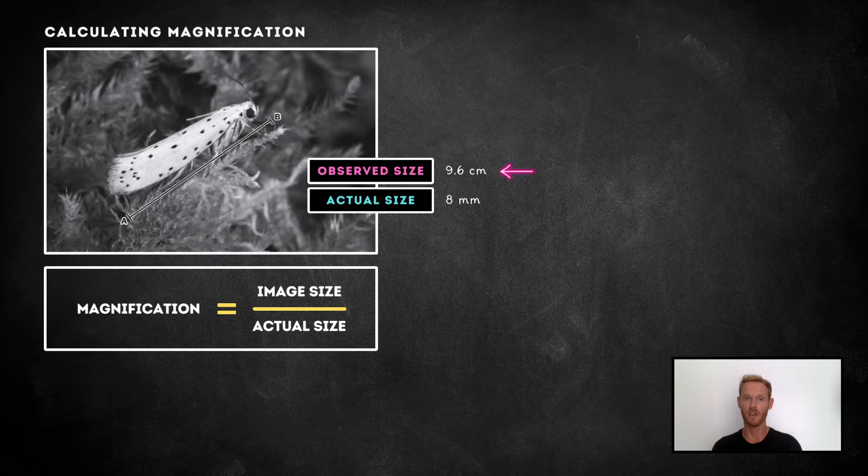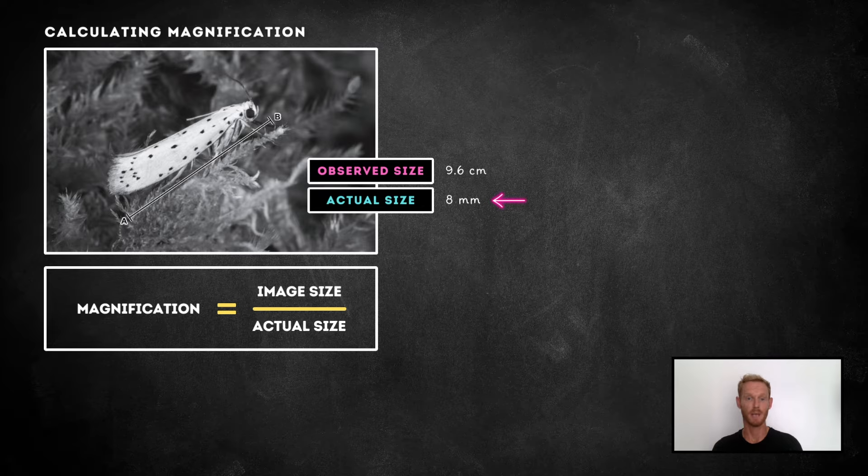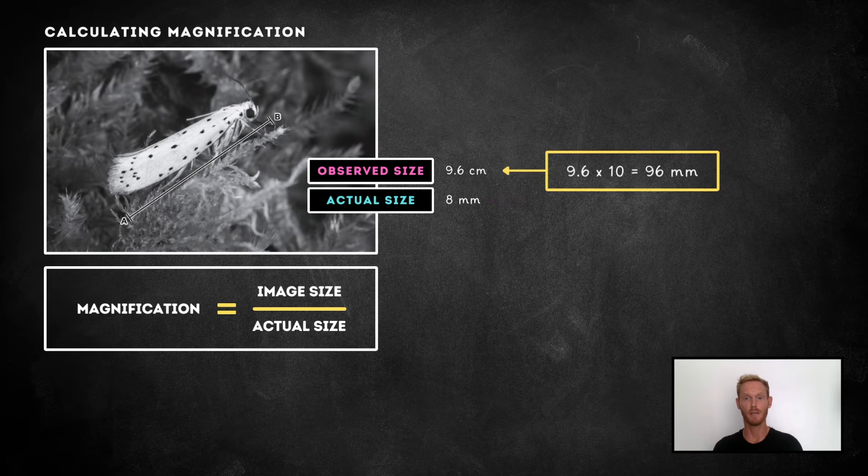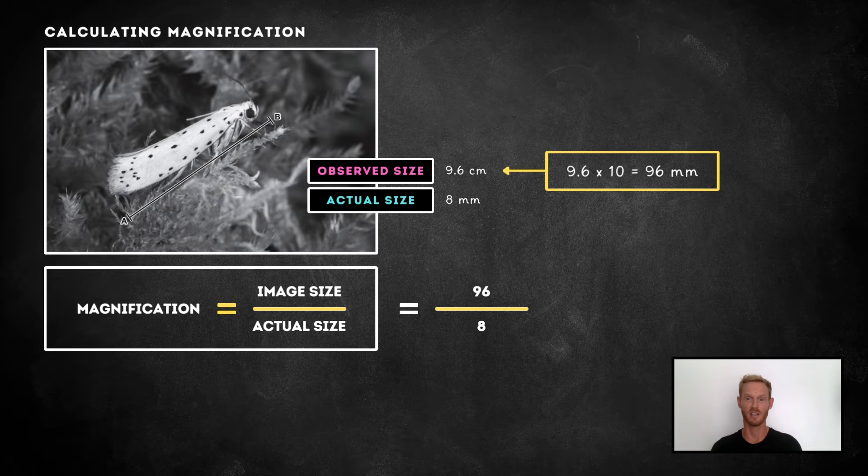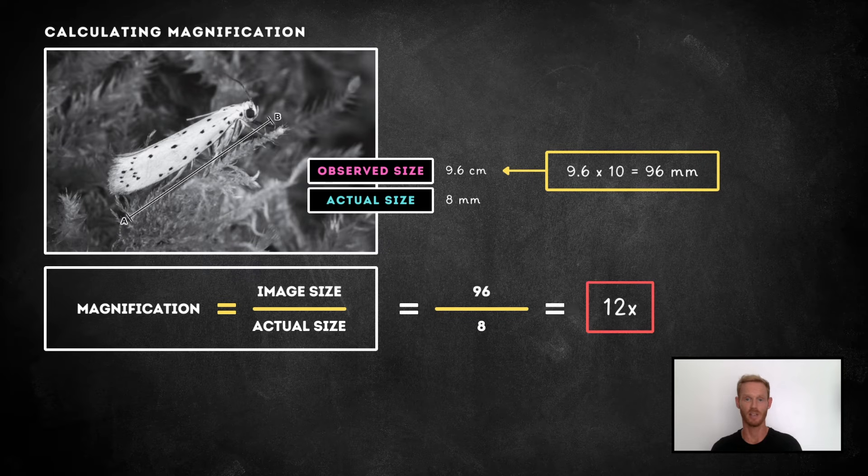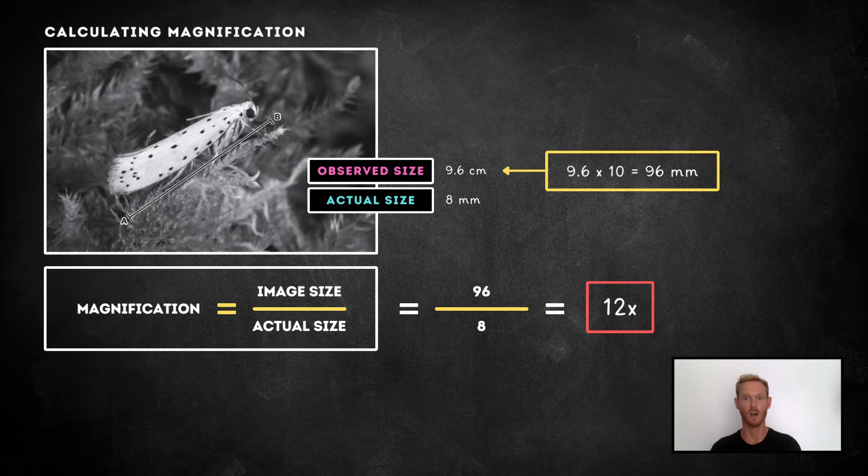In this case, the image size, or observed size, has been given in centimetres, and the actual size in millimetres. As there are 10 millimetres in a centimetre, simply multiply the image size by 10. Now that the units match up, we can add these figures to the equation and calculate, giving us a magnification of 12 times.